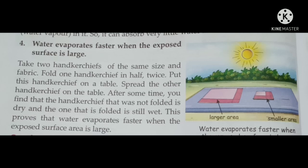Spread the other handkerchief flat on the table without folding it. Wet both handkerchiefs before placing them. After some time, you will find that the handkerchief that was not folded is dry, while the one that was folded is still wet. This shows that the unfolded one, having a larger exposed surface, dried faster.